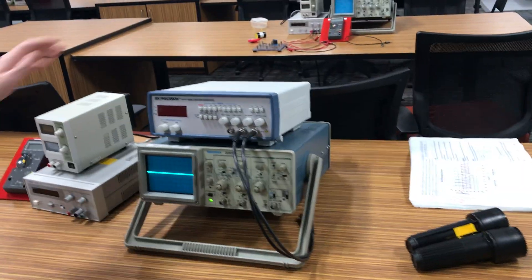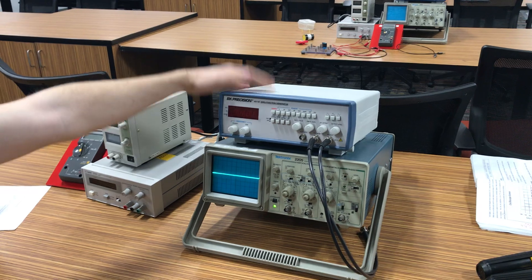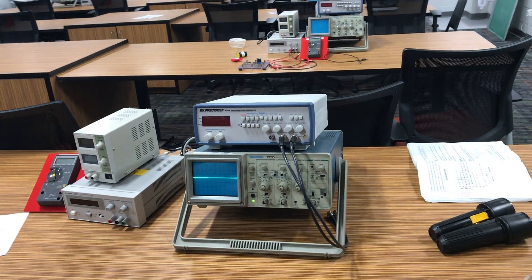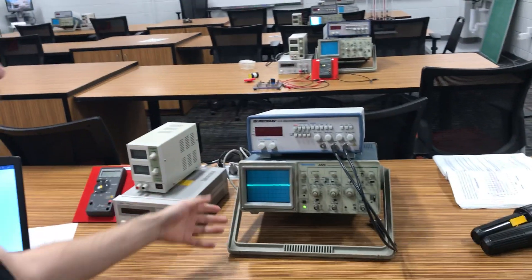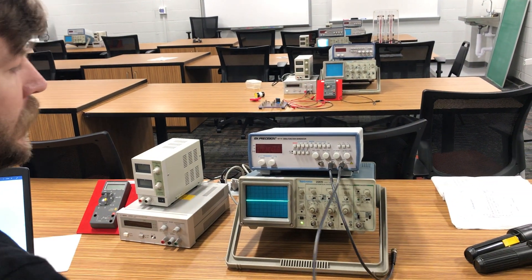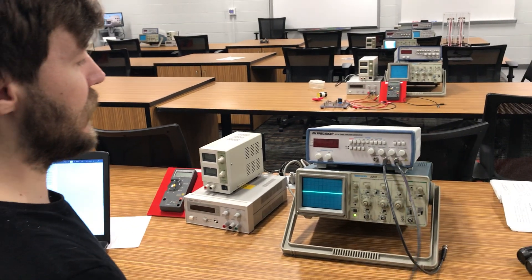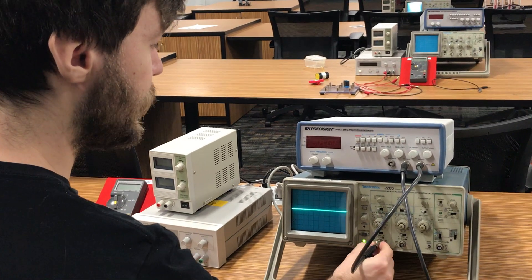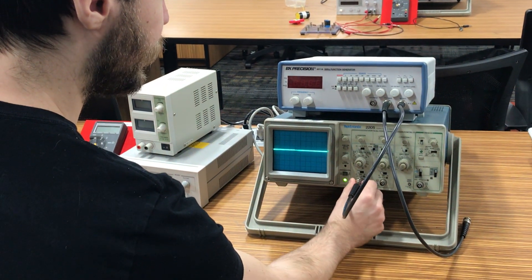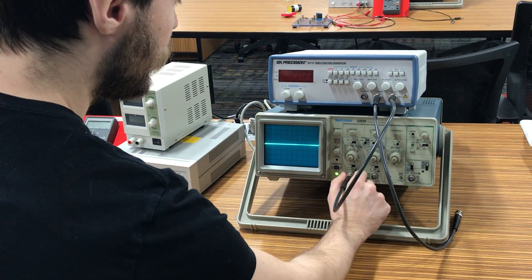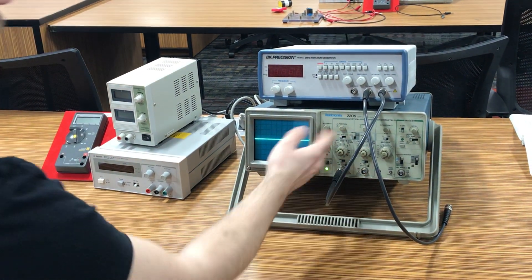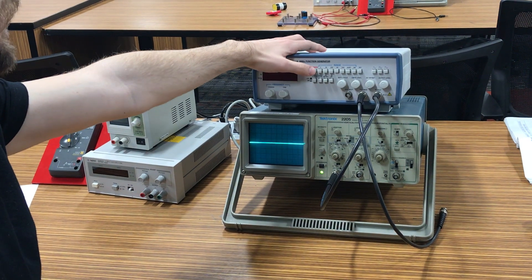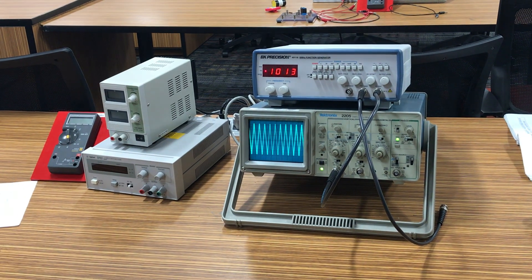For part 2 now we're going to bring in our function generator. The function generator is what's actually going to output our signal and provide voltage into this system. We'll take this cable from the output and hook it into channel 1 of our oscilloscope. We have our oscilloscope set to read this and now we'll power on our function generator.